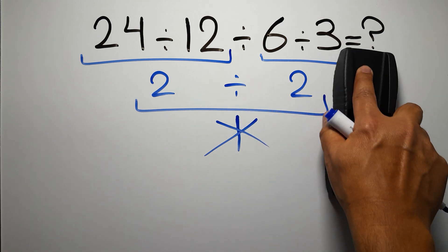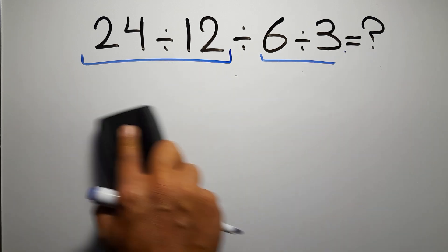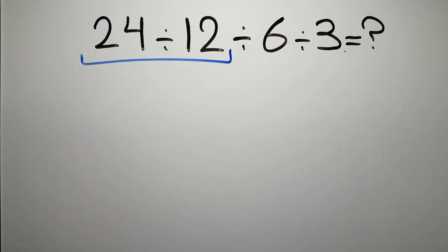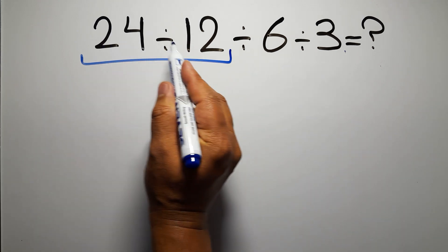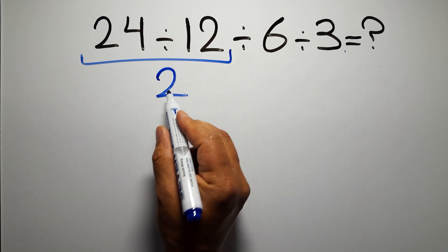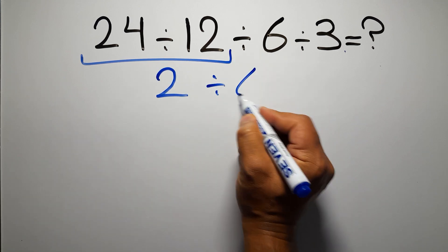So first this division: 24 divided by 12 which equals 2. So 2 divided by 6 and divided by 3.